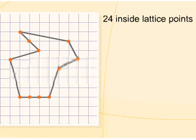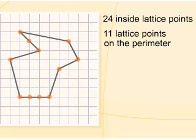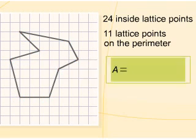He found how many lattice points there are on the perimeter of the polygon. There are 11 such points.